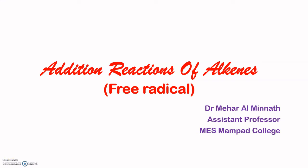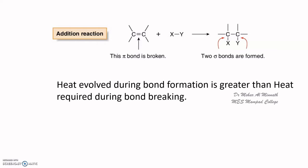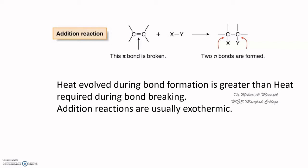Let us have a look at the addition reactions of alkenes. In this video we will be dealing with the free radical mechanism of the addition reaction. During an addition reaction, the reagent is added onto the double bond of the alkene, the pi bond is broken, and two new sigma bonds are formed. Usually the heat involved during bond formation is greater than the heat required during bond breaking, and therefore addition reactions are usually exothermic in nature.